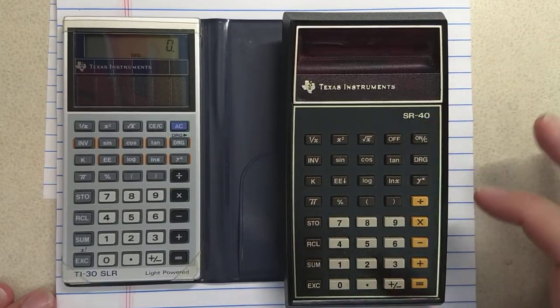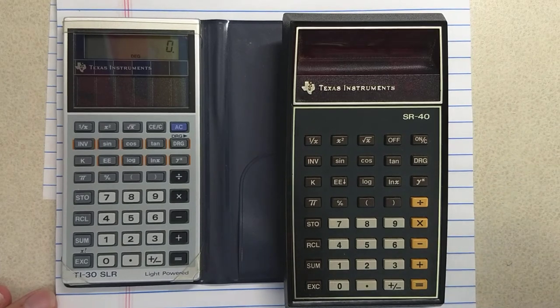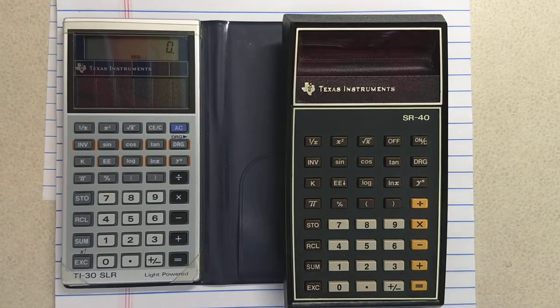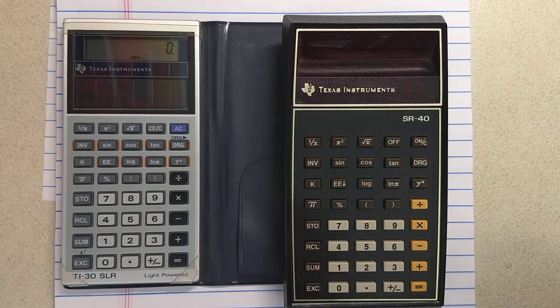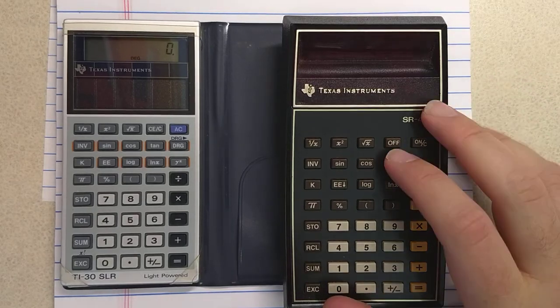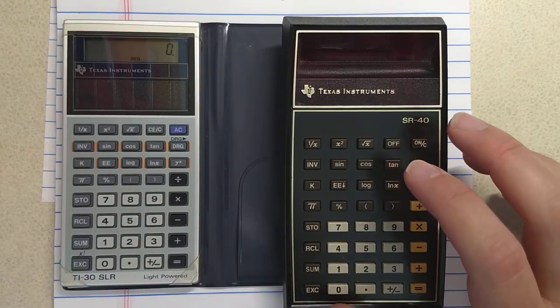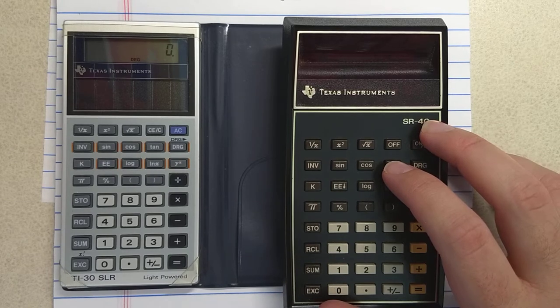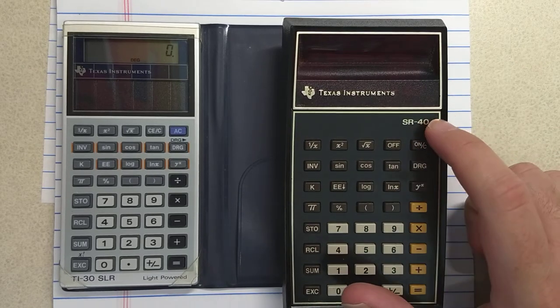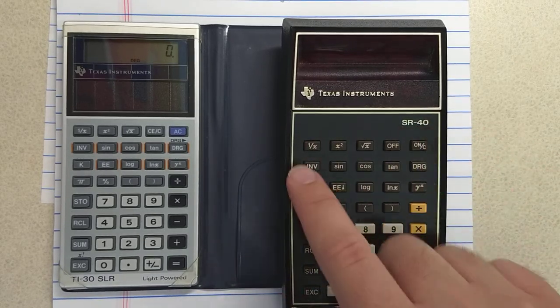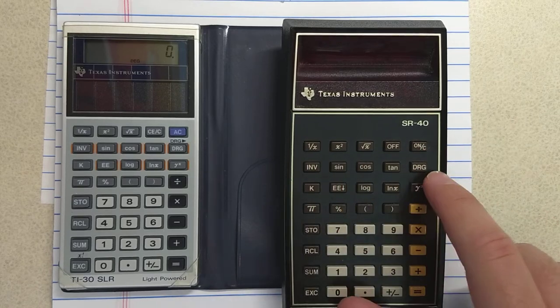The SR-40 and the TI-30, the calculator that killed slide rules, were both introduced in 1976. The SR-40 is kind of an upscale TI-30. Compared to the TI-30, there's basically two differences. The SR-40 has keys with actual printing on them.